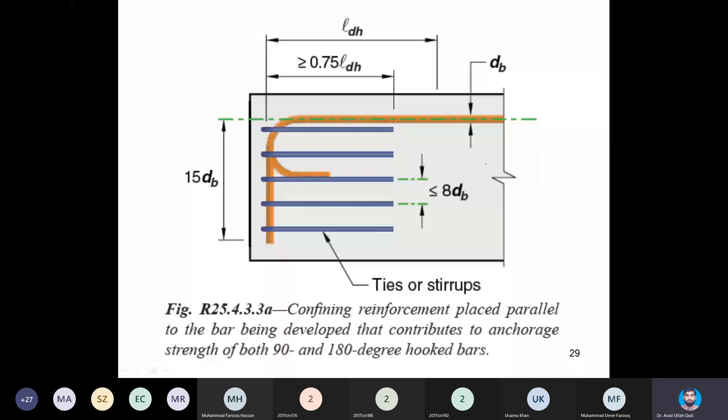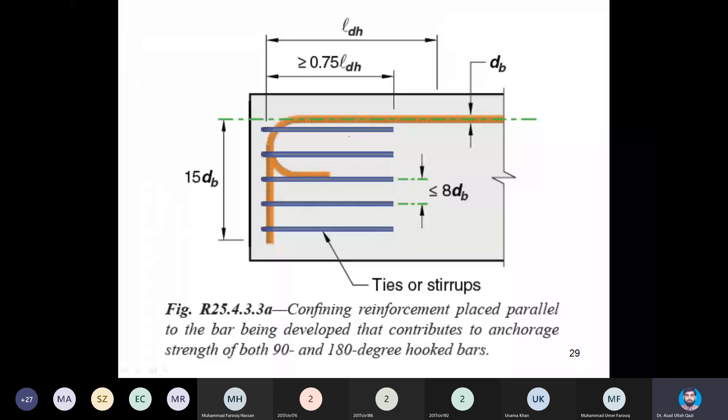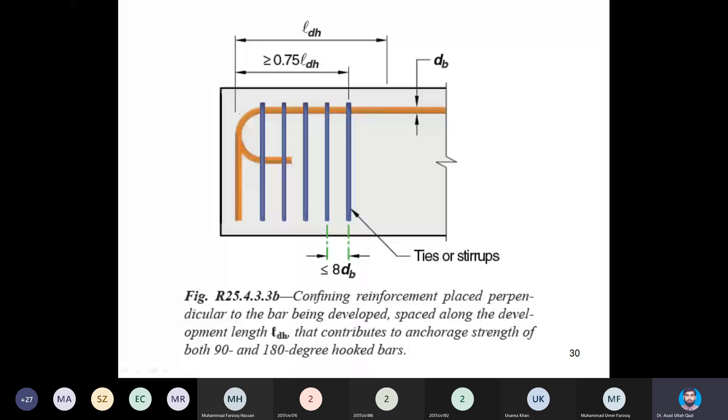If we are saying ATH is the total cross-sectional area of ties or stirrups confining the hook bars, it means we need to calculate the area of all bars which are confining the hook bars - the area of ties or stirrups. In this case, these are the ties which are confining the tail of the hook bars. And in this picture, these ties are confining the straight portion of the hook bars.